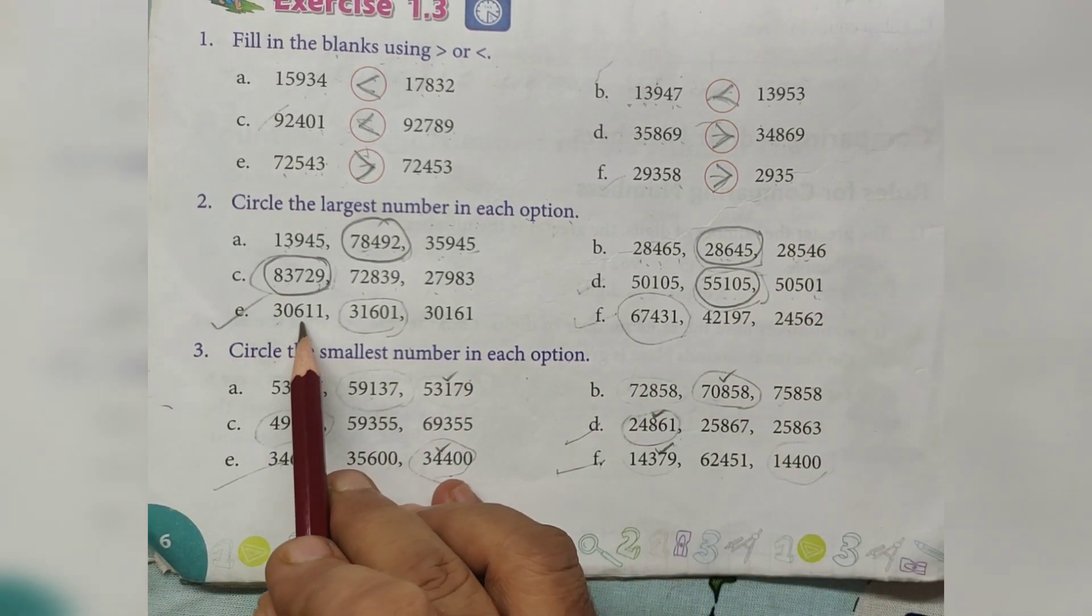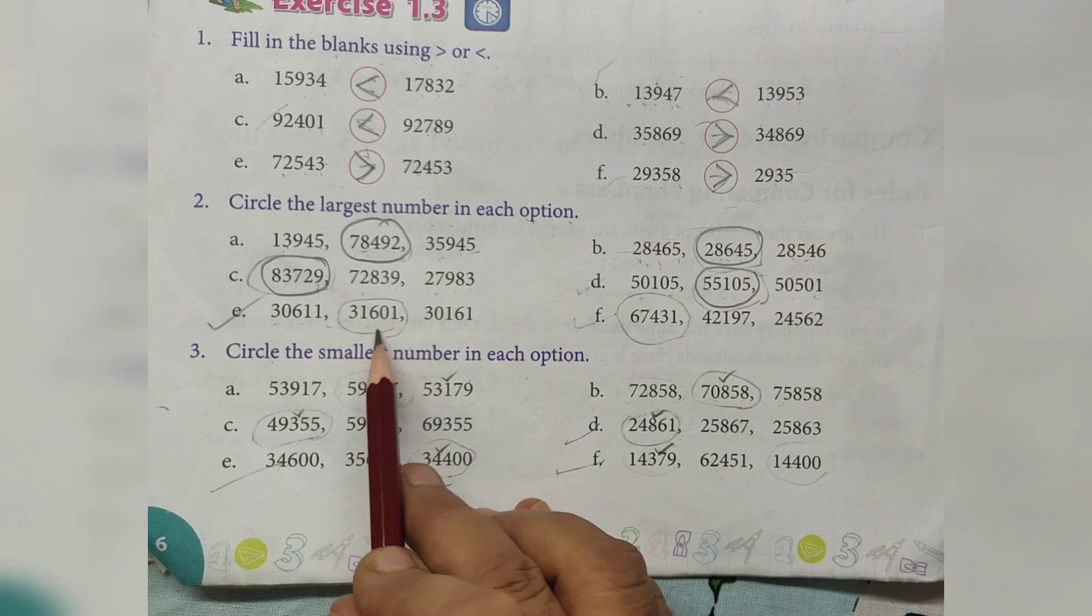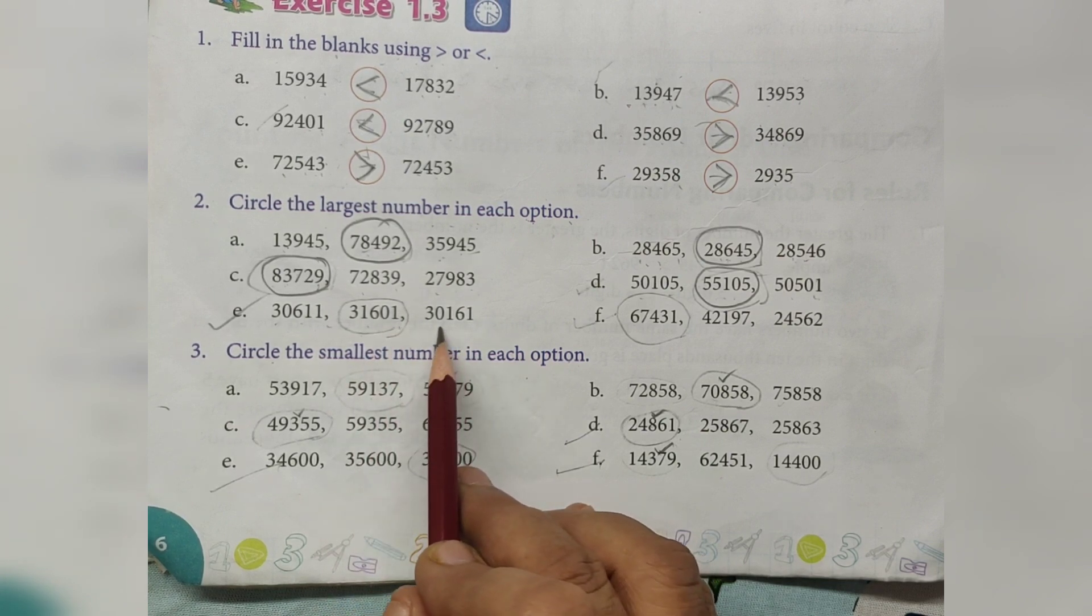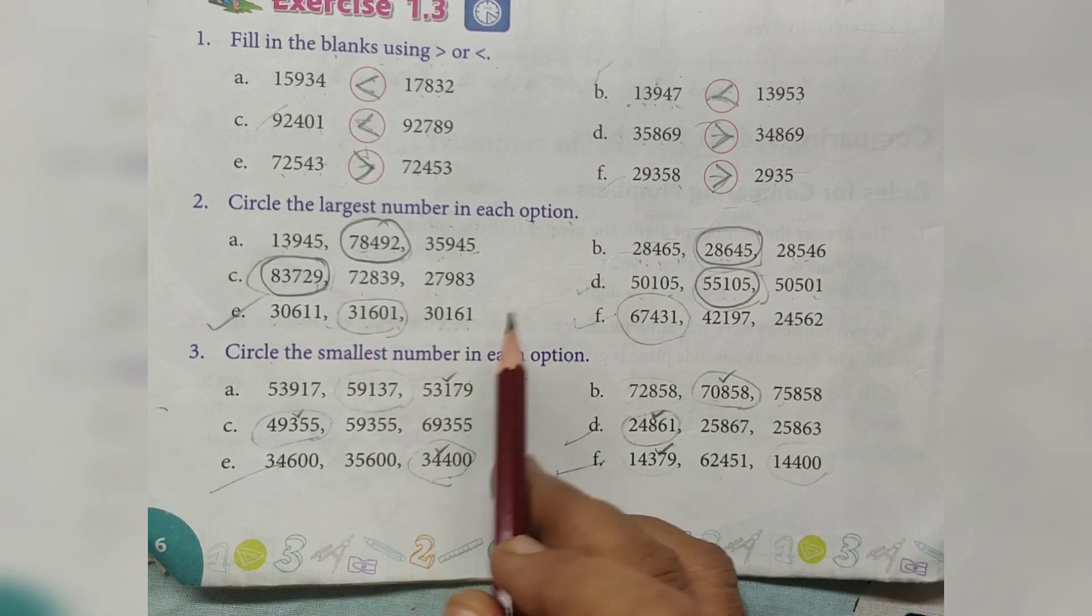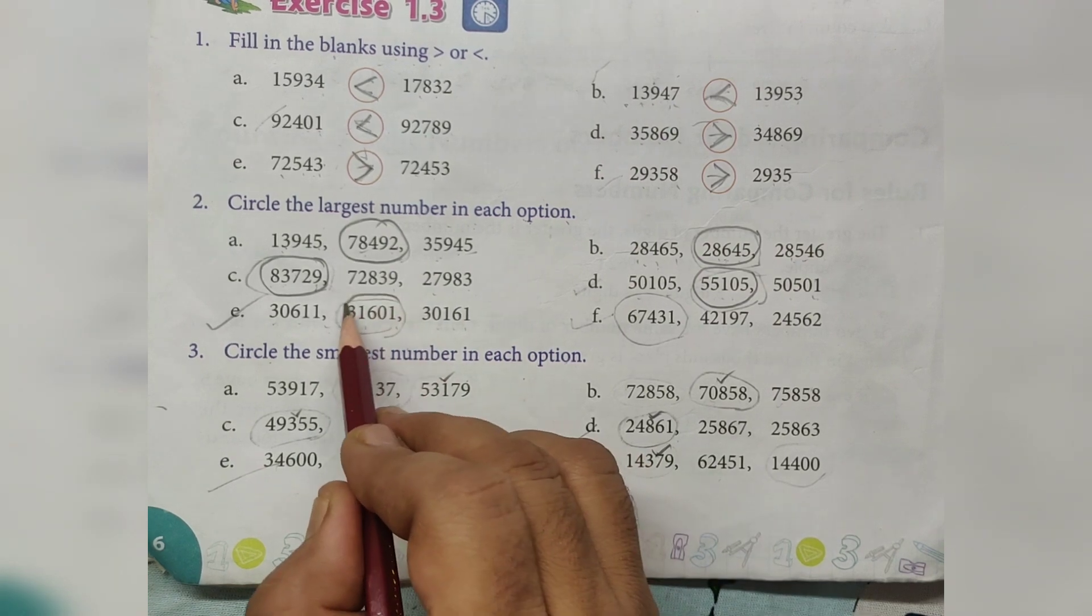30,611, 31,601, 30,161. 31,000, largest number.